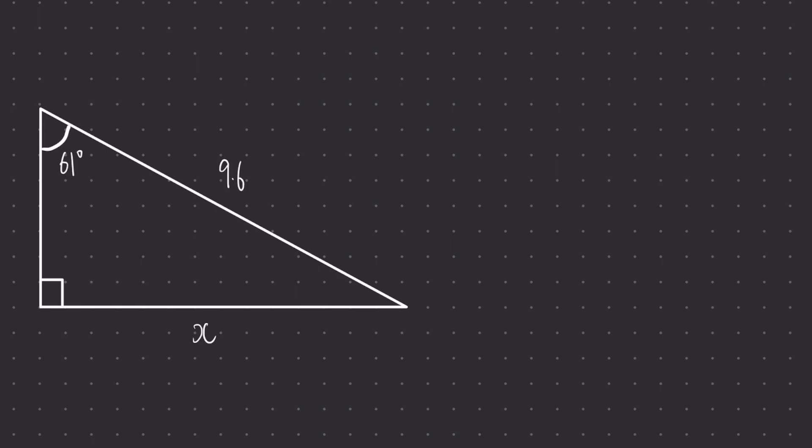So when we get these questions there will always be an angle labelled, and we'll always have two sides that are being discussed. Our job then is to first label this right-angled triangle with respect to the angle that is labelled.